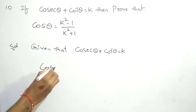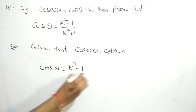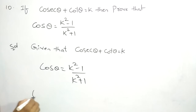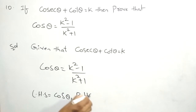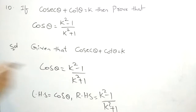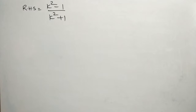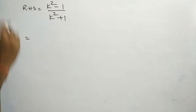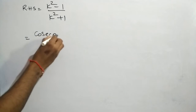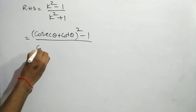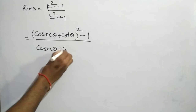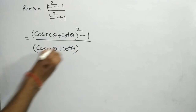We are taking LHS as cosθ and RHS as (k² - 1) / (k² + 1). By using the RHS we are going to prove the LHS. The k value is (cosθ + cotθ)² - 1, divided by (cosθ + cotθ)² + 1.